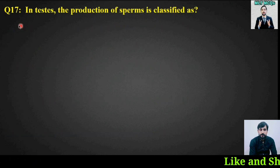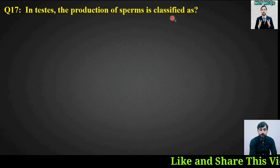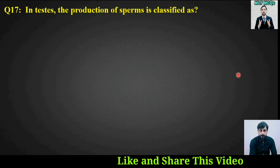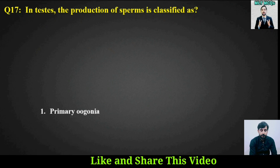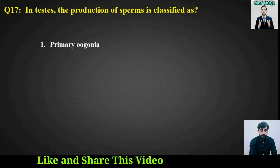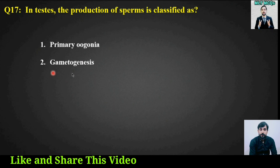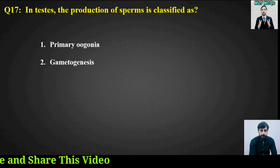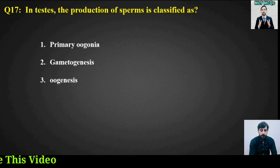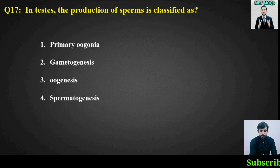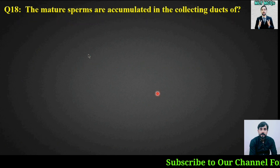MCQ number seventeen: In the testes, the production of sperm is classified as what? Options include primary oogonia, gametogenesis, or spermatogenesis. The right answer is spermatogenesis.